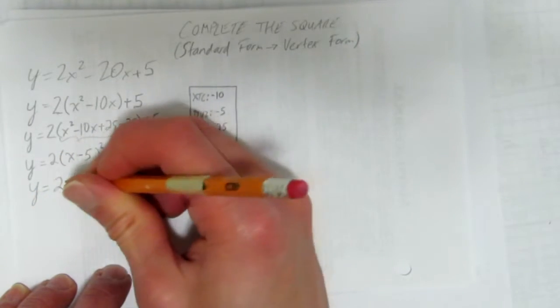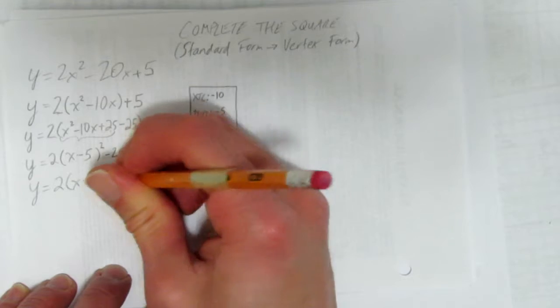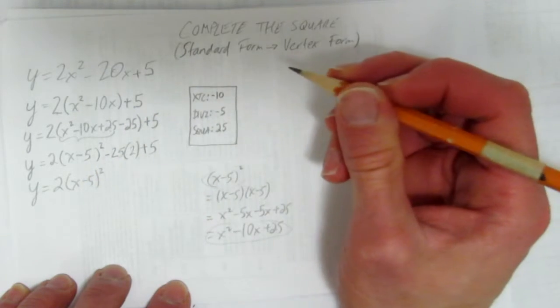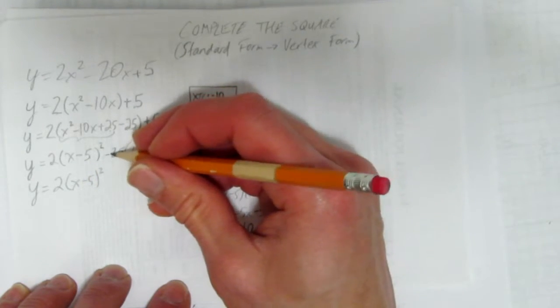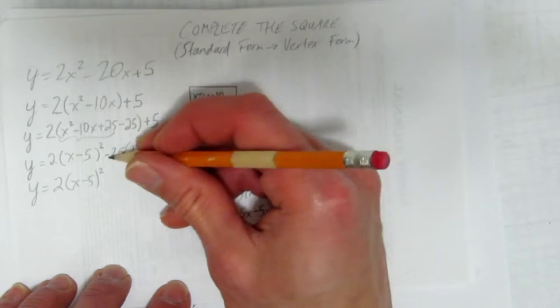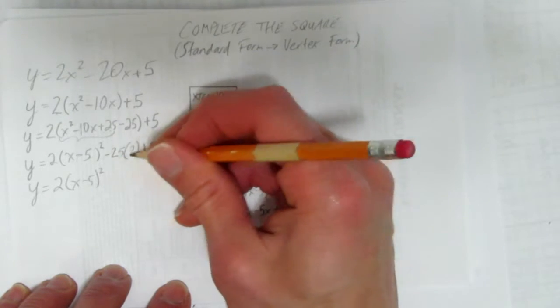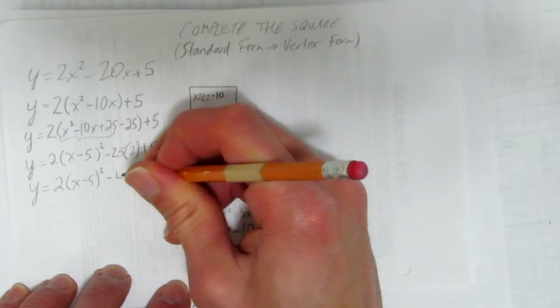Last step, simplify. You have 2 times x minus 5 squared. But now we just have to simplify. What's minus 25 times 2, that's like 2 quarters, that's minus 50. What's minus 50 plus 5? Minus 45. And we have completed this square.